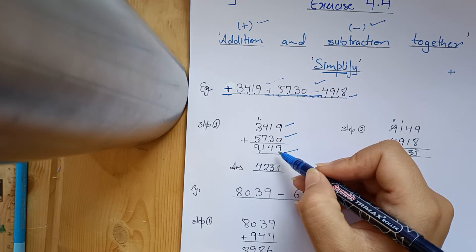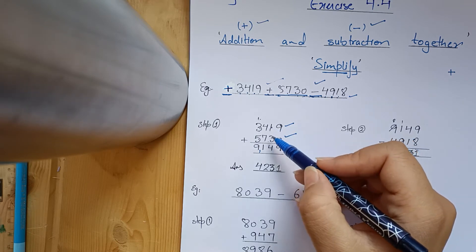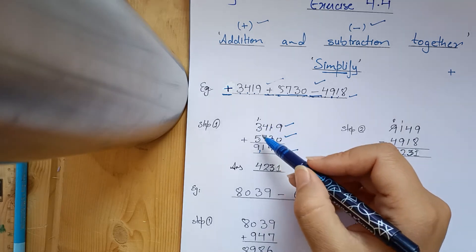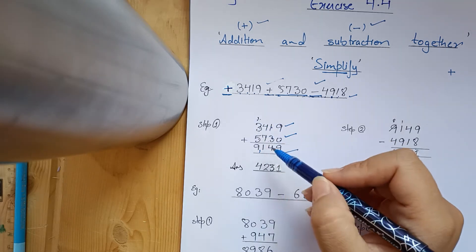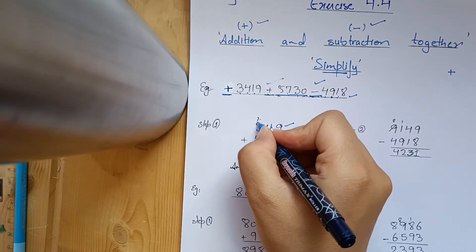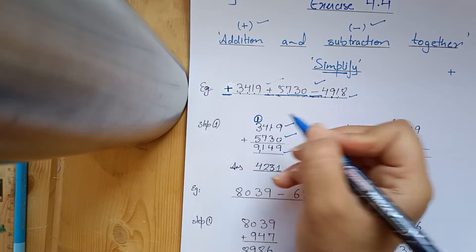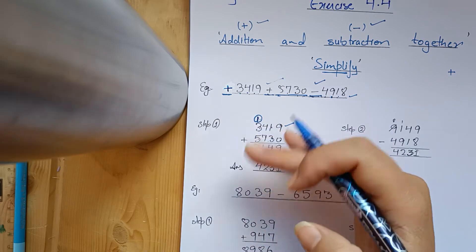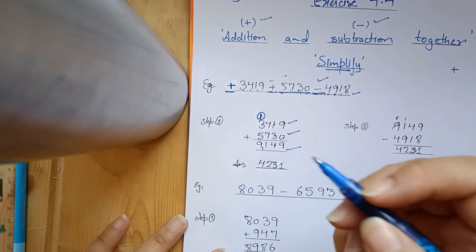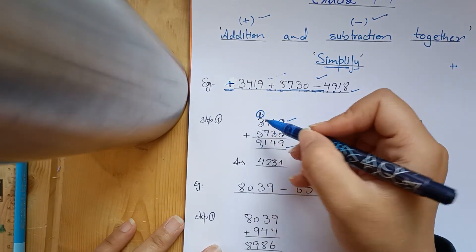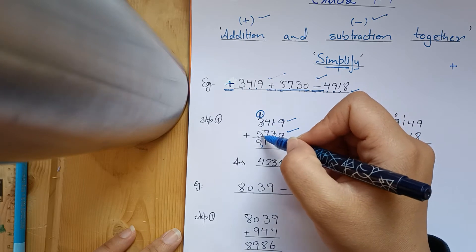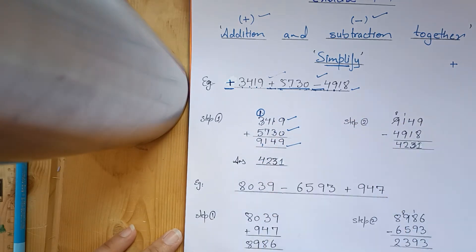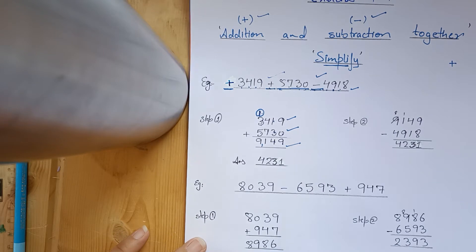We will add the plus numbers together. That's 9, 1 plus 3 is 4, 4 plus 7 is 11. Carry the 1 in a circle, so it differentiates from the actual numbers. Then 3 plus 1 is 4, 4 plus 5 is 9. So what is your answer? 9,149.